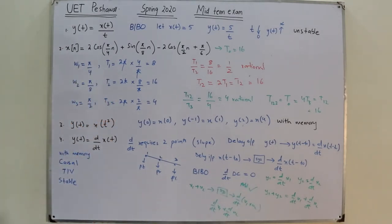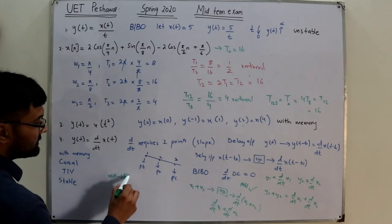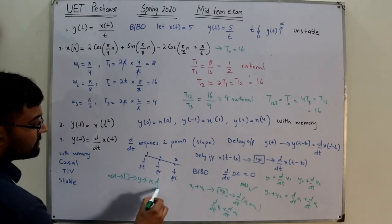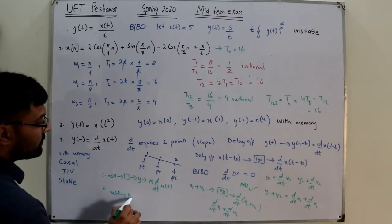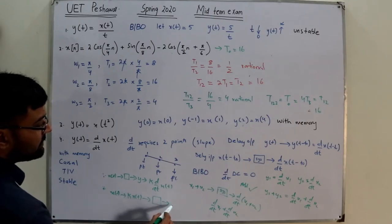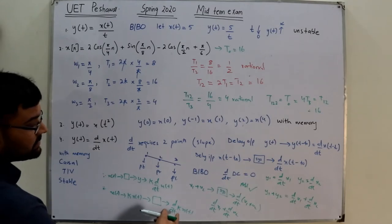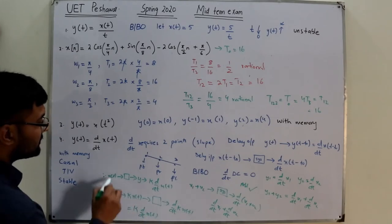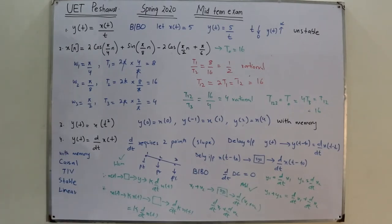For homogeneity: k times the derivative of x(t) on one side; feeding k·x(t) into the system gives derivative(k·x(t)) = k·derivative(x(t)), since k is a constant. Both sides match, so homogeneity is satisfied, and this is a linear system.